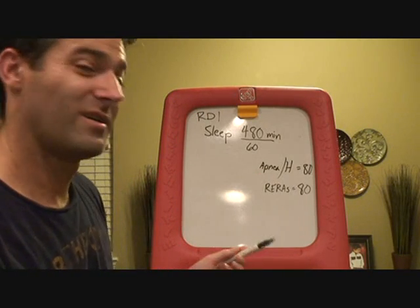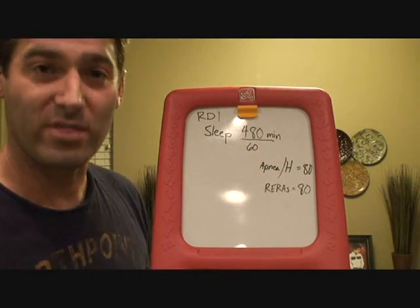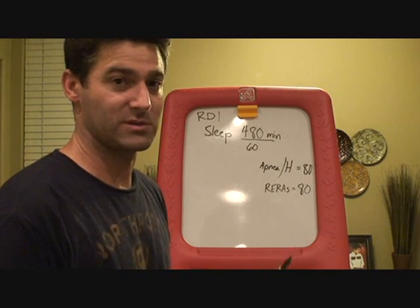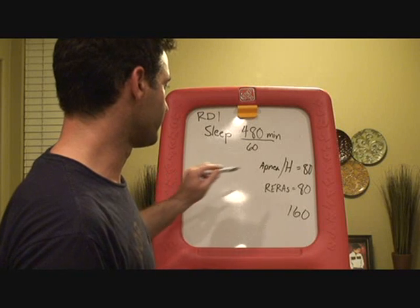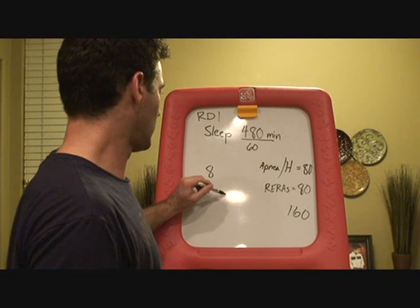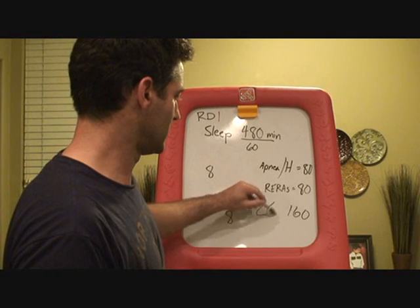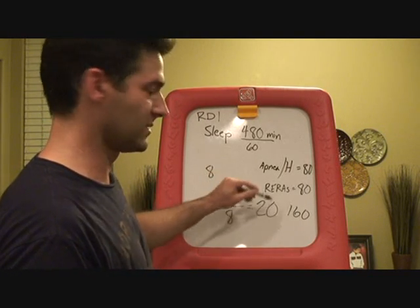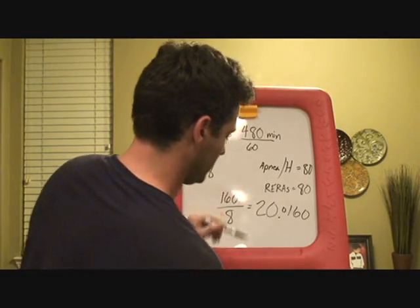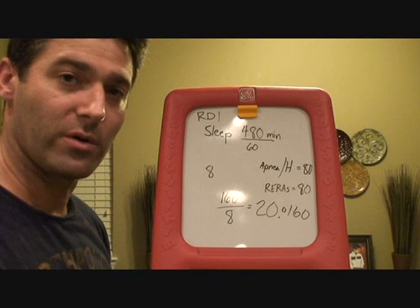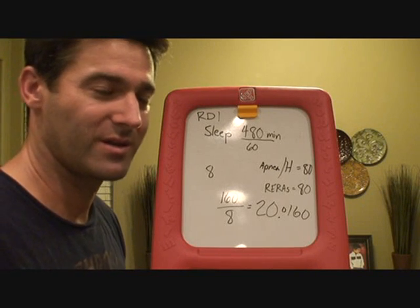Let's say you have 80 RERAs too. So you add these up because it accounts for everything breathing-related that woke you up — anything that's a respiratory disturbance. So we have 160 total, with the same eight hours of sleep, and we divide 160 by eight, which is 20. So you have an RDI of 20. That means 20 times per hour you're waking up from something — or broken down, every three minutes you're waking up, which gives you a feel for how much that's disrupting your sleep.